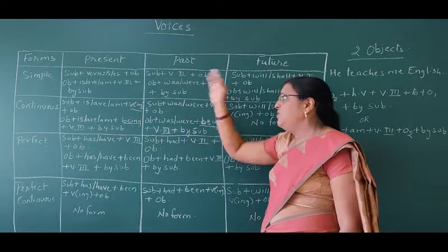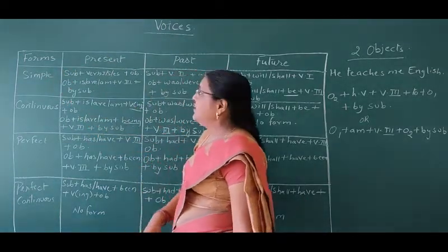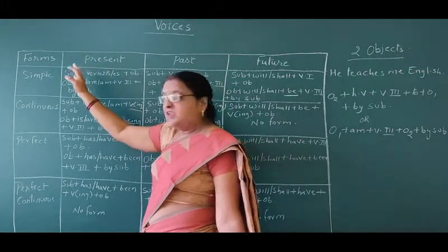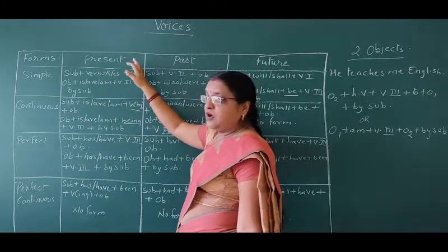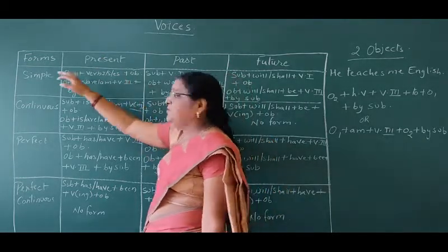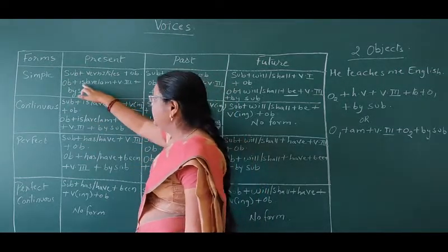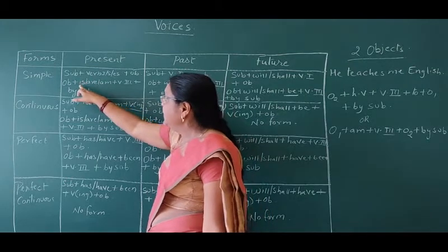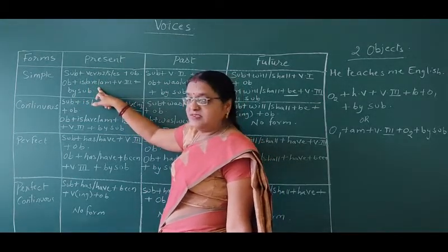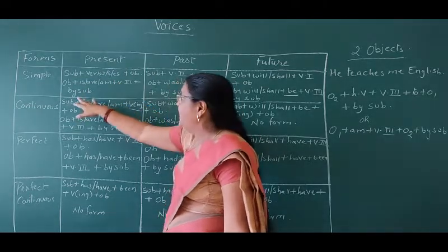Let's begin with the simple tenses, starting with the present tense. In active voice: subject plus first form of the verb for plural subjects, or first form with 's/es' for singular subjects, plus object. In passive voice, the object comes in front, treated as the subject, along with the helping verb — is, are, or am. Is with singular, are with plural, am with 'I' — plus the third form of the verb, plus 'by' and the subject.